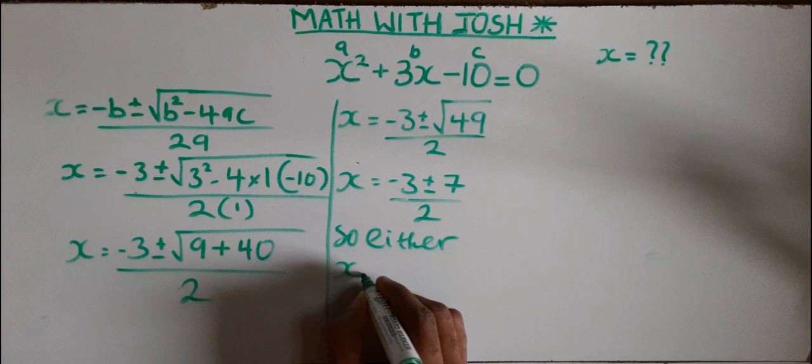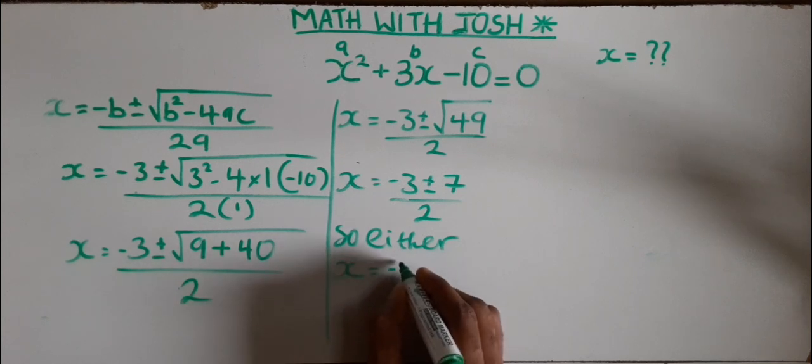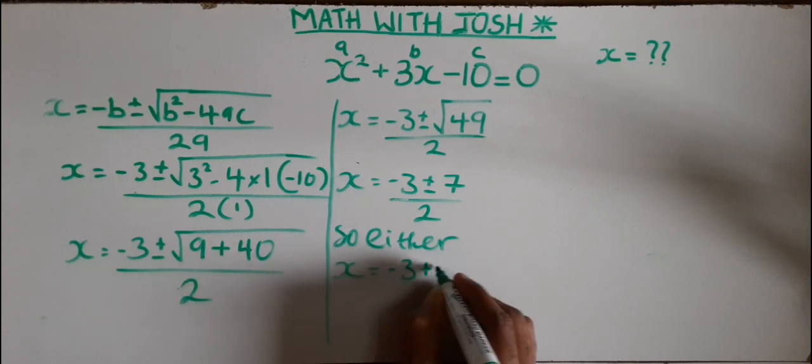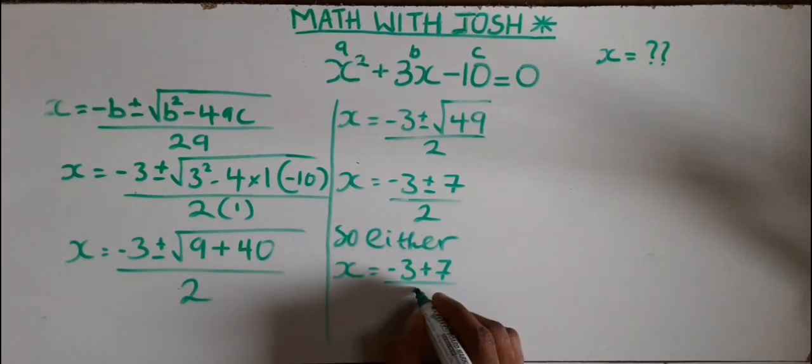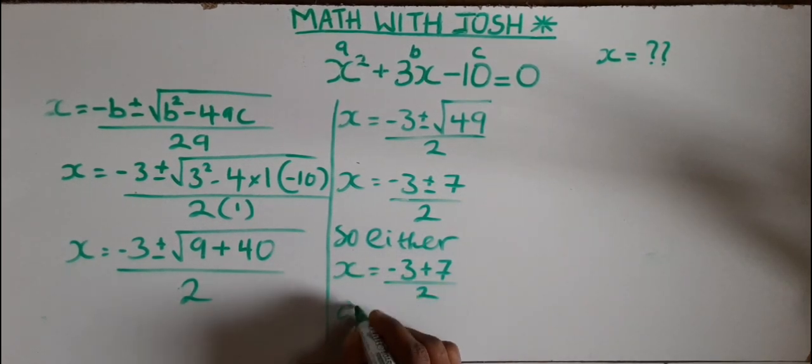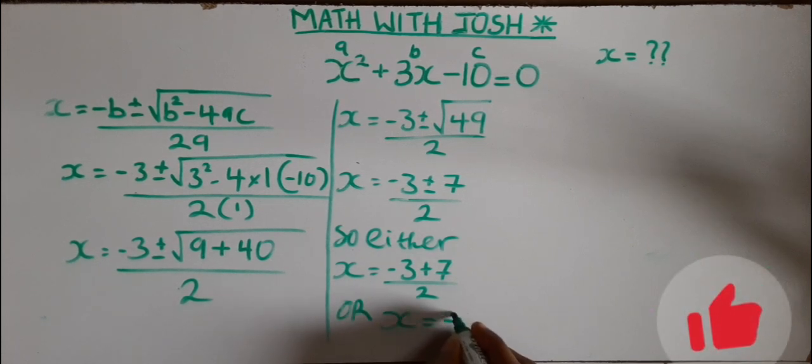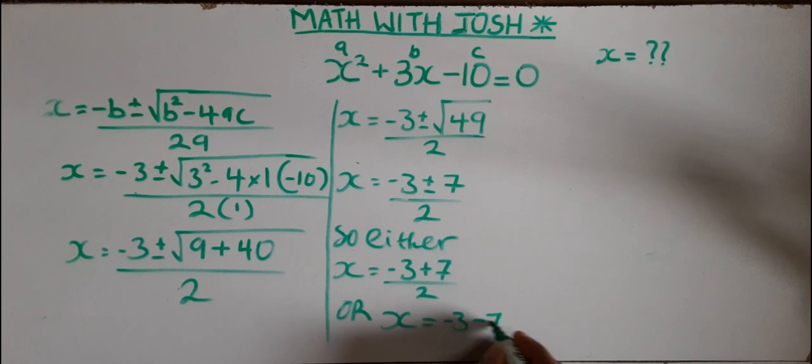Either x is equal to minus 3 plus 7 all over 2, or x is equal to minus 3 minus 7 over 2.